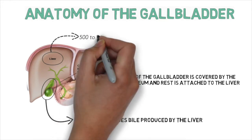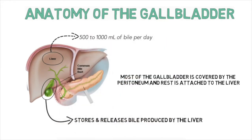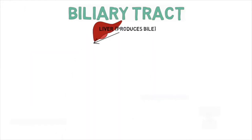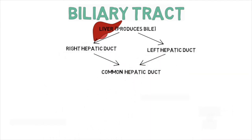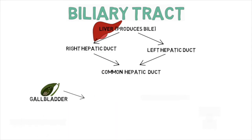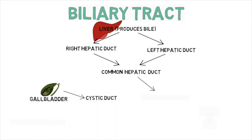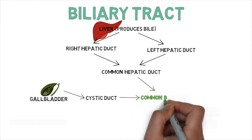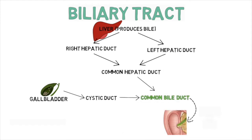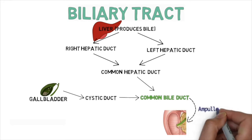The liver produces about 500 to 1000 ml of bile per day. This is excreted through the right and left hepatic ducts, which join together to form the common hepatic duct. The gallbladder communicates with the biliary system through the cystic duct, which combines with the common hepatic duct to form the common bile duct. The common bile duct then empties into the duodenum via the ampulla of Vater.